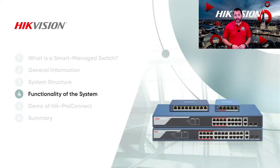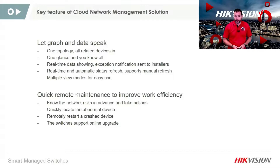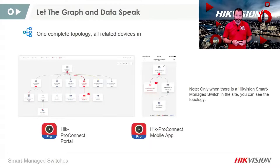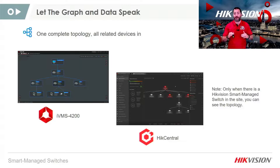Some of the key features to highlight: you get one topology showing all of your devices in one place, making it easy to see everything on one page. Health monitoring gives a full overview of all products built into the system. Real-time product data with feedback and notifications is sent to those that need it. Remote maintenance enables installers and integrators to support maintenance needs quickly and efficiently. Examples of the topology in HikePro Connect, IVMS 4200, and Hike Central show how you can visualize the system topology — although the colors differ, you can clearly see devices hanging off the switch layer by layer.